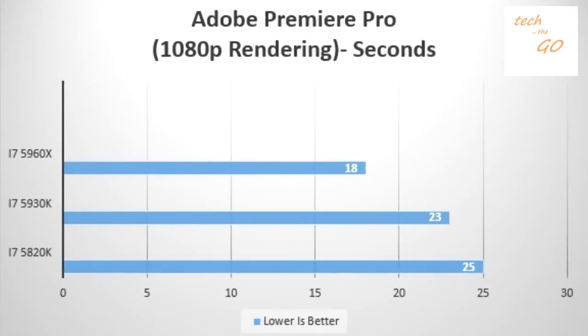On Adobe Premiere Pro 1080p rendering, the i7-5960X completes the rendering in 18 seconds, the i7-5930K completes in 23 seconds, and the i7-5820K completes in 25 seconds.